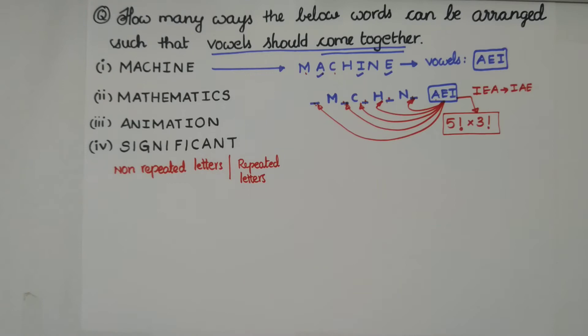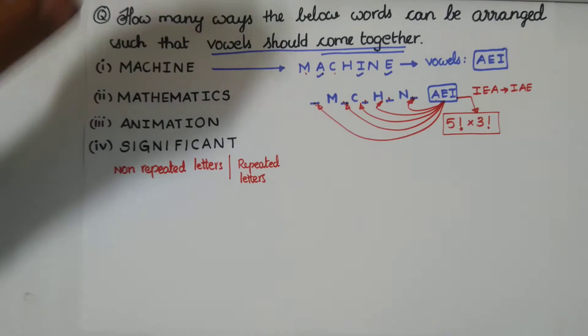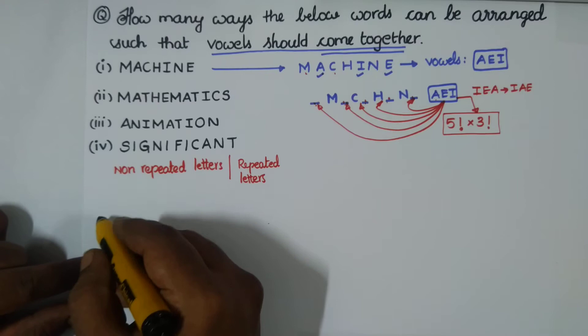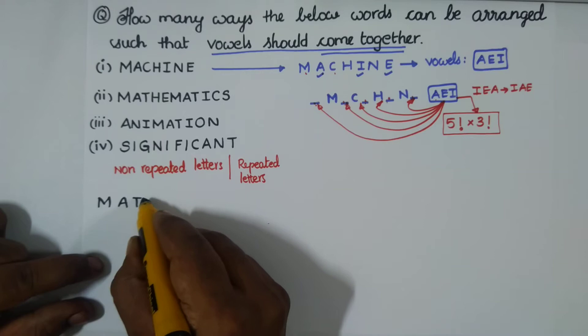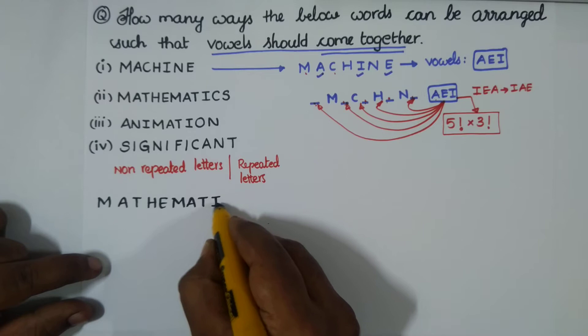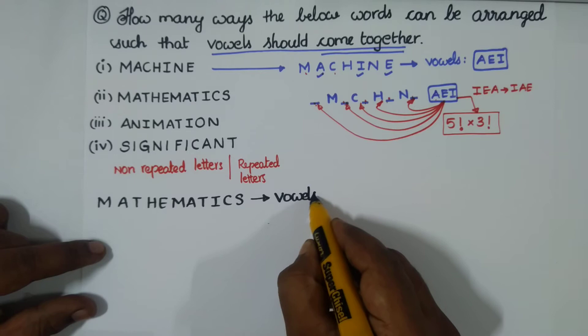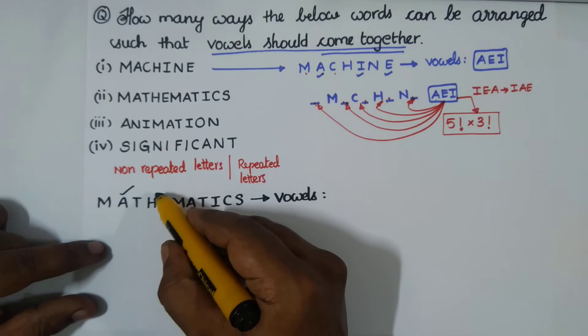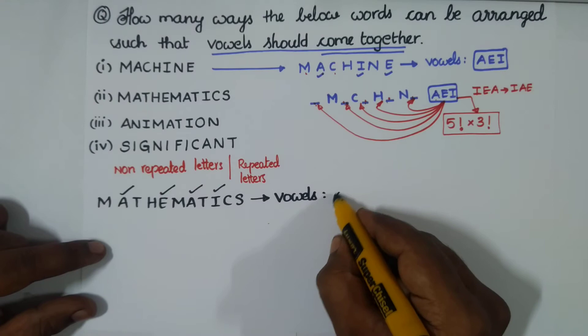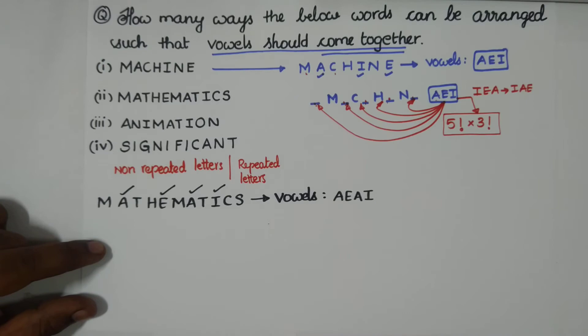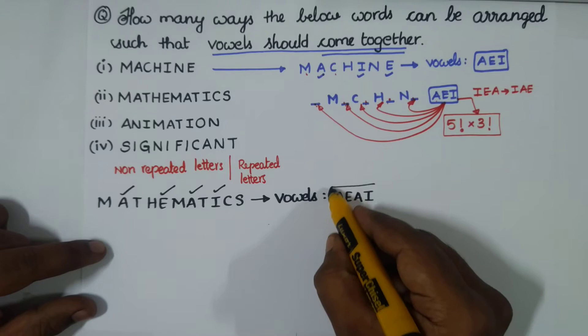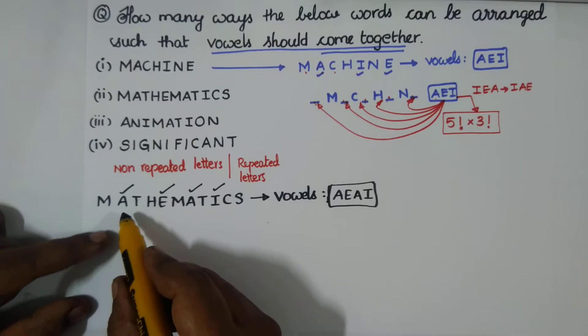Next word is MATHEMATICS: M, M, A, T, H, E, M, A, T, I, C, S. Let's identify the vowels. In MATHEMATICS the vowels are A, E, A, I. Notice that the vowel A appears twice, so in our vowel group we have A, E, A, I.